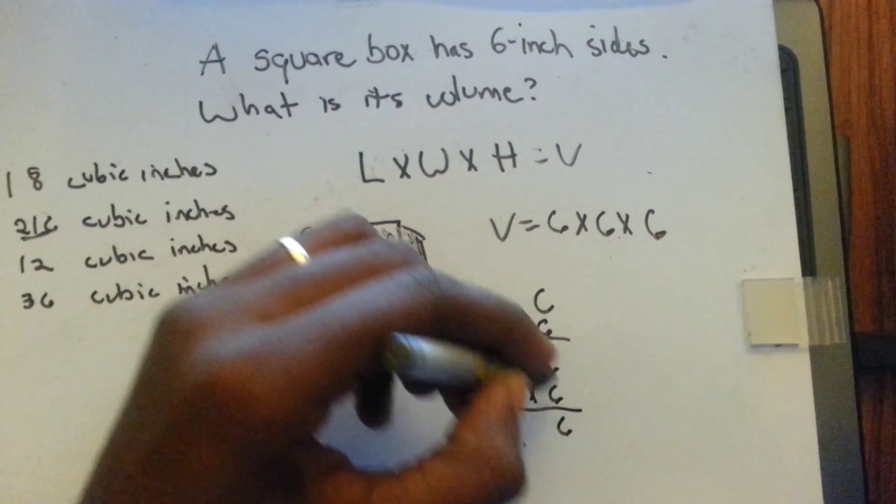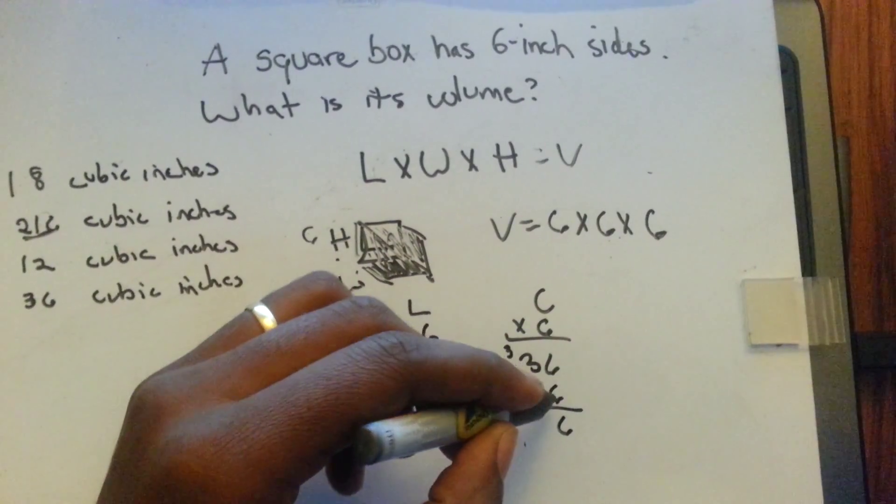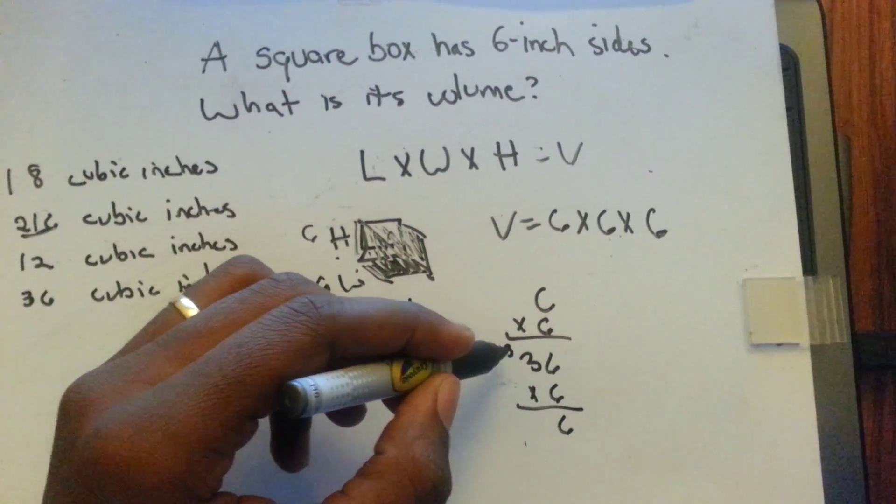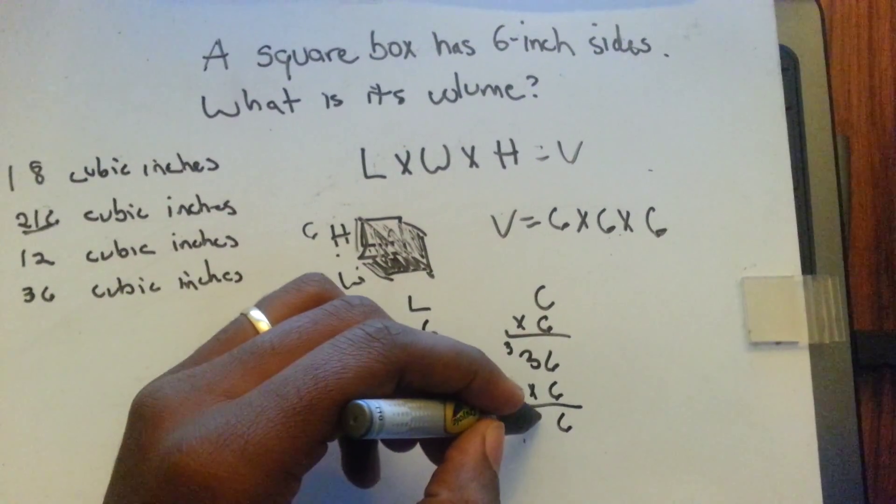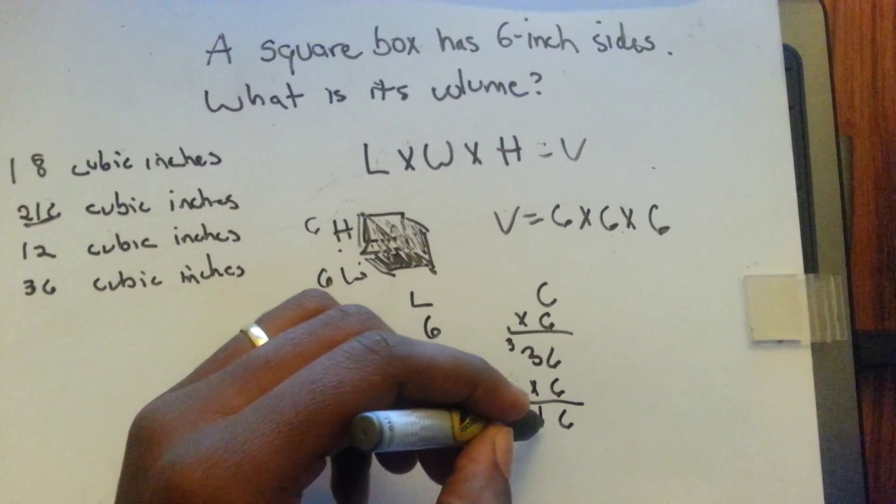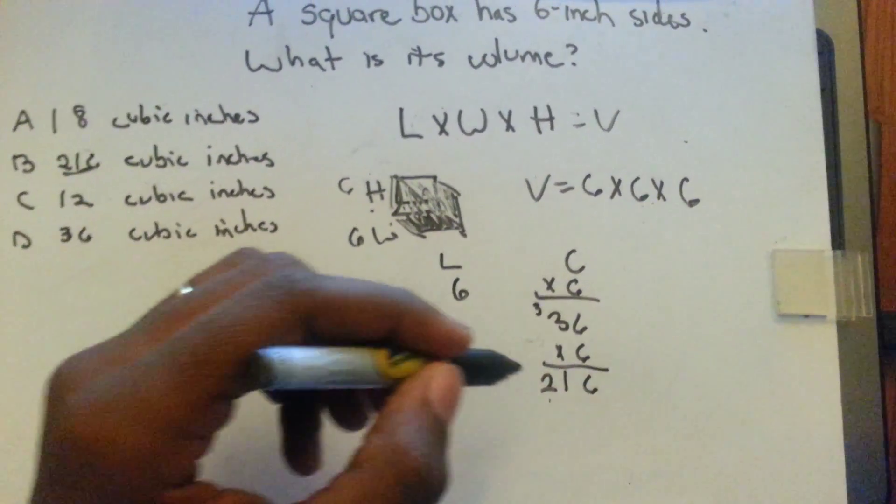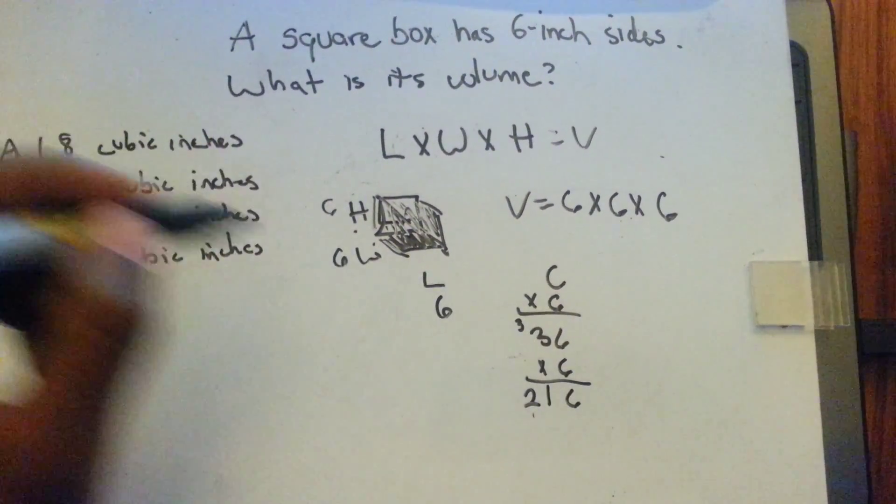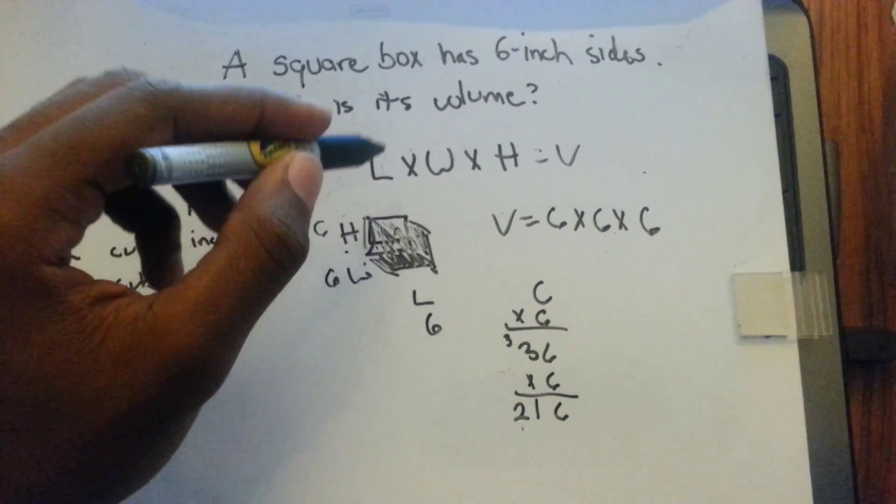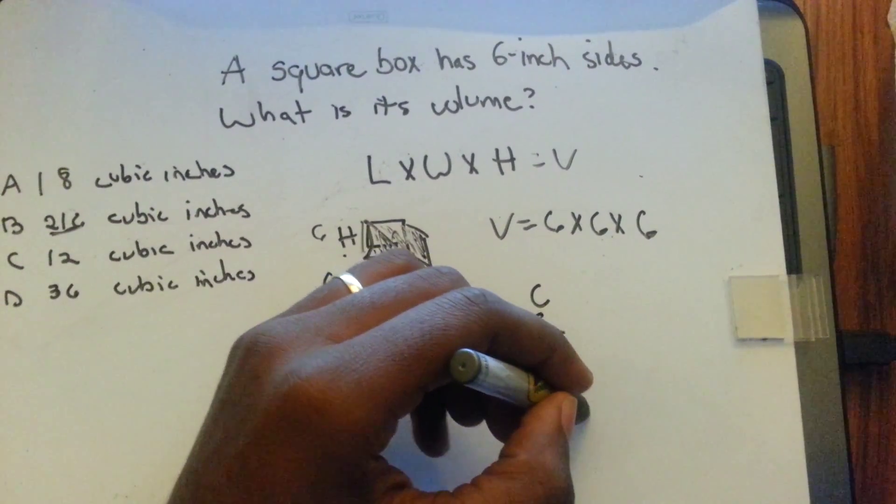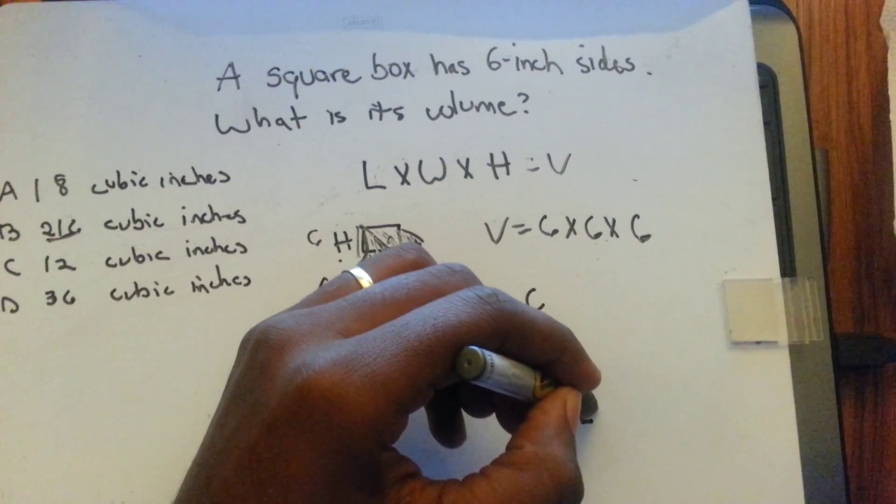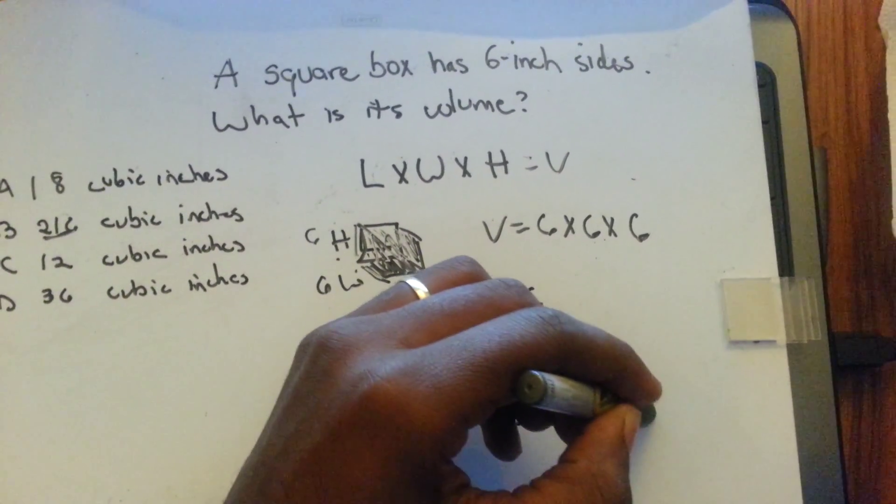Six times six, 36, put the three up top, six times 18, six times three is 18 plus three is 21, equals 216. And that our answer since we're multiplying inches times inches times inches, that's going to be 216 cubic inches.